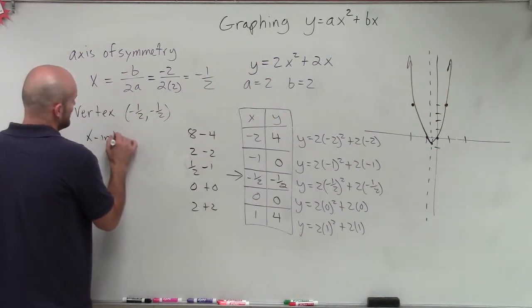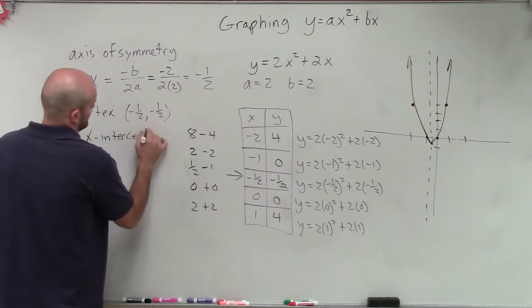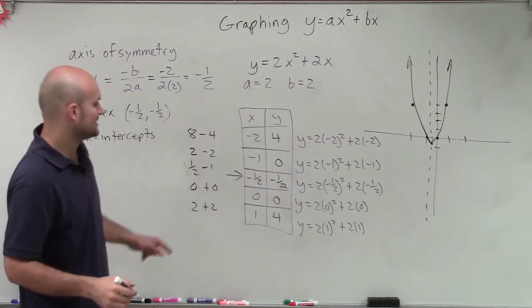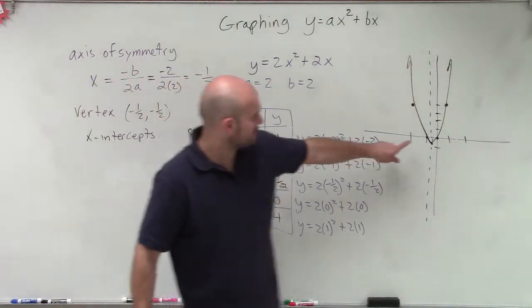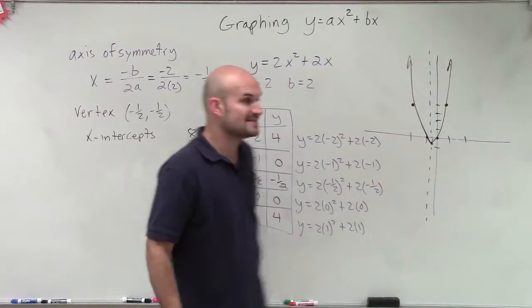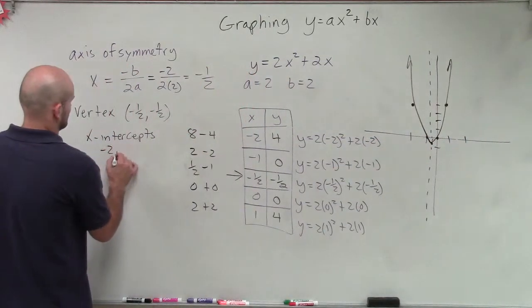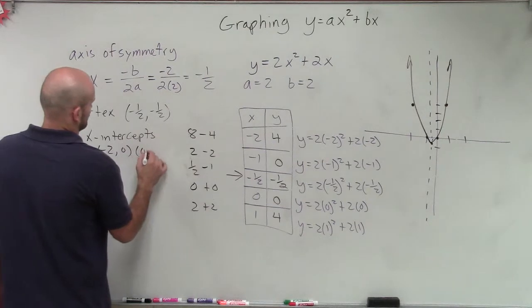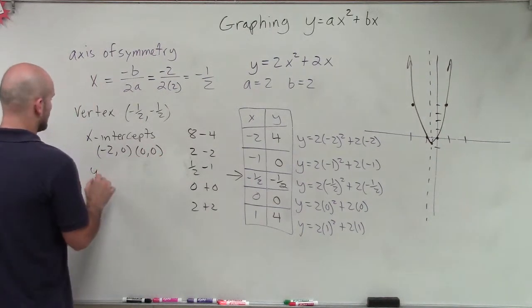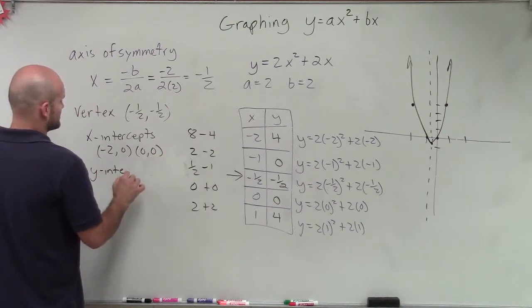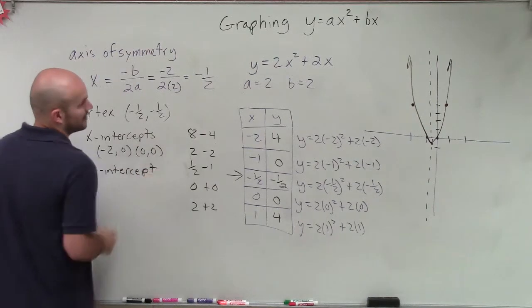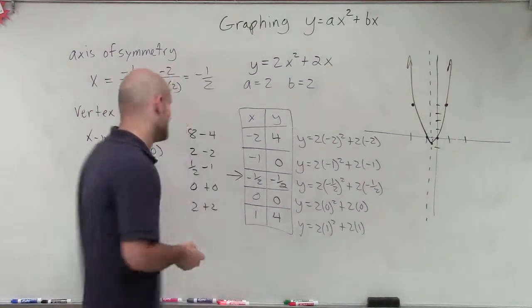Then we look at our x-intercepts. So our x-intercepts in this case, you can see that my graph crosses at negative 2, 0 and 0, 0. And our y-intercept is where the graph crosses the y-axis. And it only crosses there once at the point 0, 0.